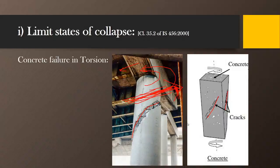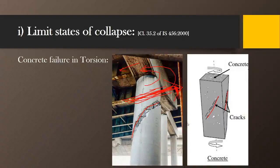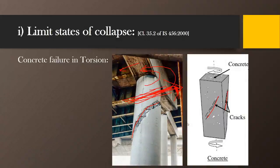The limit state of collapse due to tension arises because tension develops in flexure, torsion, and shear. Wherever tension develops, concrete is not able to sustain it and failure of the concrete may occur. To avoid this, we normally provide reinforcement in the form of torsion steel, stirrups, or bent-up bars. Stirrups and bent-up bars are provided for shear resistance and are called shear reinforcement, while torsion steel may be provided at the side faces or as additional stirrups.